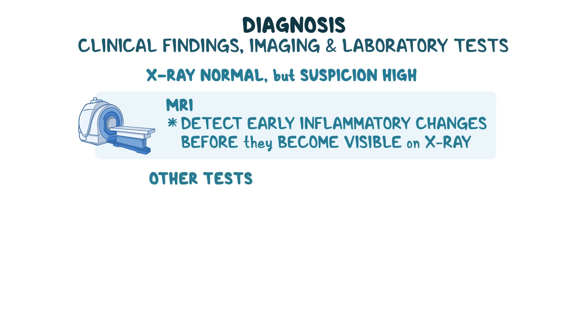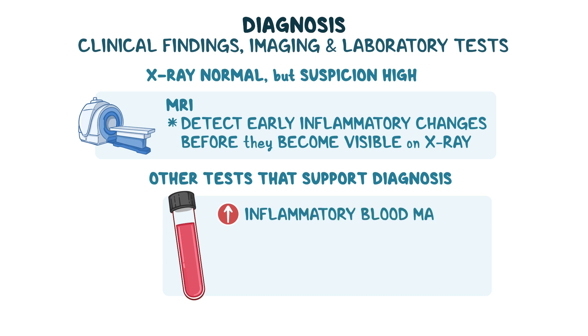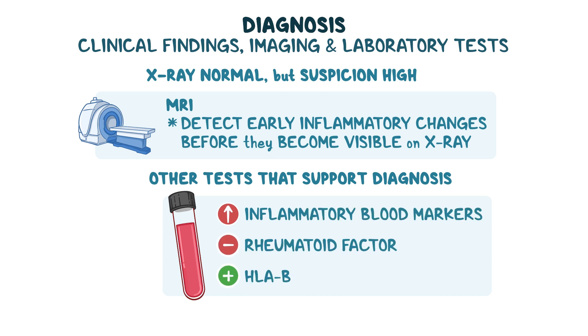Other tests that support the diagnosis of AS include elevated inflammatory blood markers, a negative rheumatoid factor, and a positive HLA-B27 antigen.